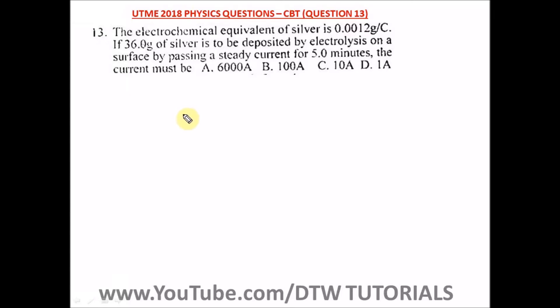Question 13 of the UTME 2018 physics past question says the electrochemical equivalent of silver is 0.0012. If 36 grams of silver is to be deposited by electrolysis on a surface by passing a steady current for five minutes, the current must be what? So we have to find the current.